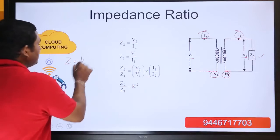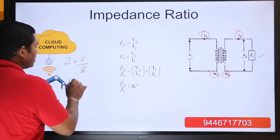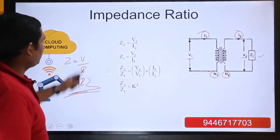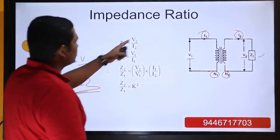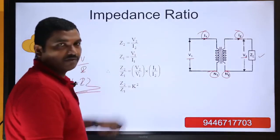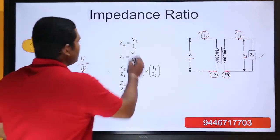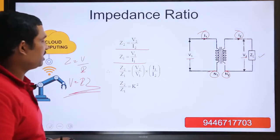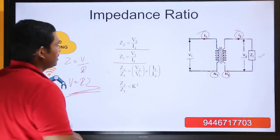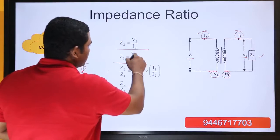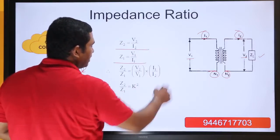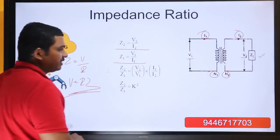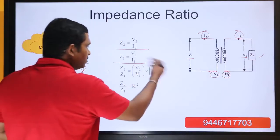The general equation is Z equals V divided by I, from Ohm's law. So Z2 equals V2 by I2 and Z1 equals V1 by I1. Making the ratio Z2 by Z1, and substituting V2/V1 times I1/I2: V2 divided by V1 is K and I1 by I2 is also K. So Z2 by Z1 equals K squared, meaning Z2 equals K squared Z1.